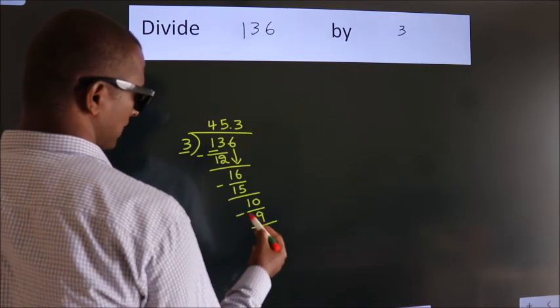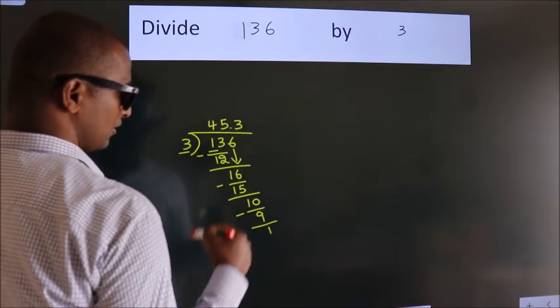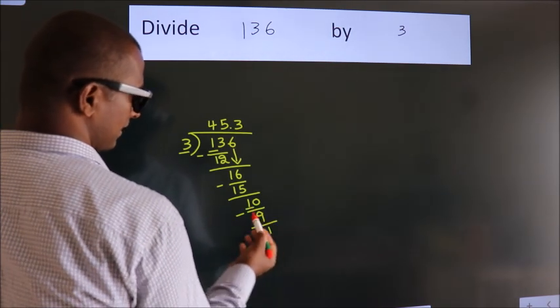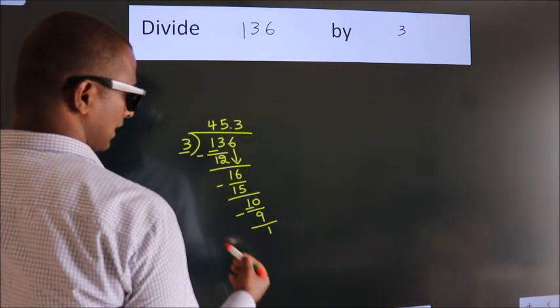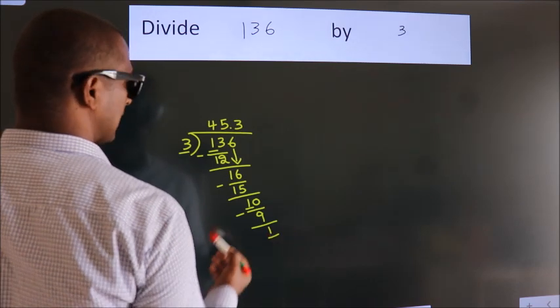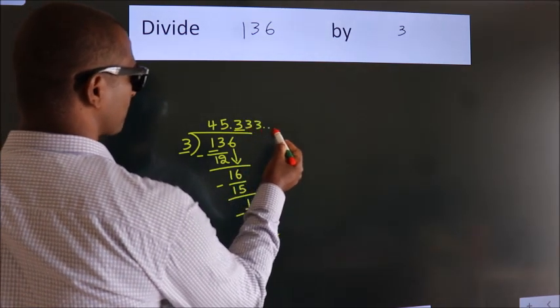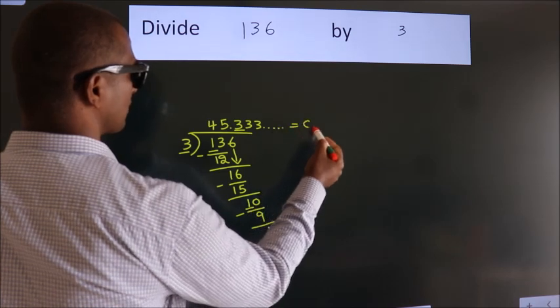Now, we subtract. We get 1. Now, you observe. We had 1 here, and we got 1 again. That means, this number keep on repeating. So, this is our quotient.